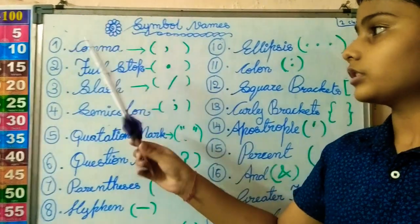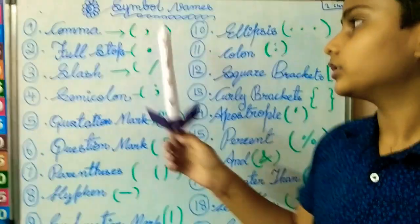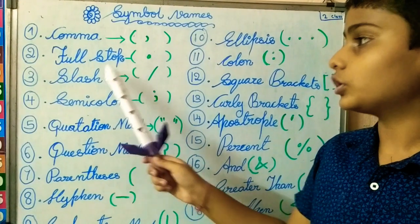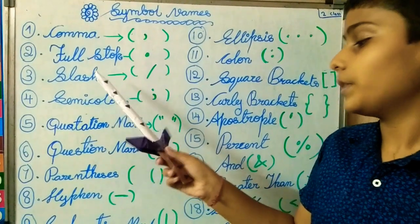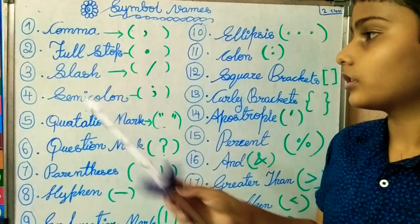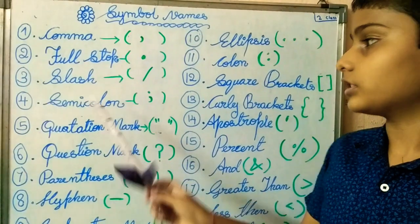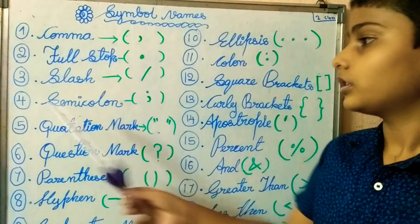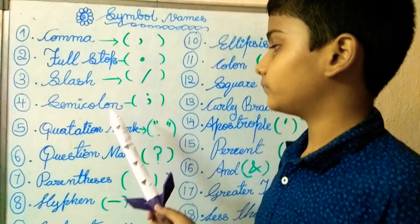First word: comma — comma symbol. Second, full stop. We put full stop at the end of the answer. Third word: slash, cross. Fourth one: semicolon.